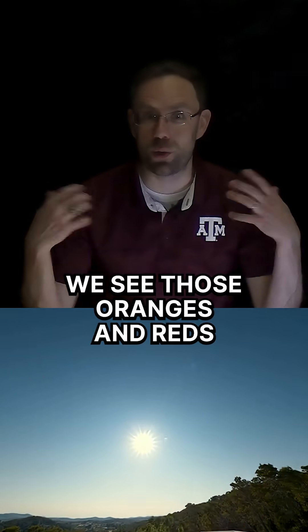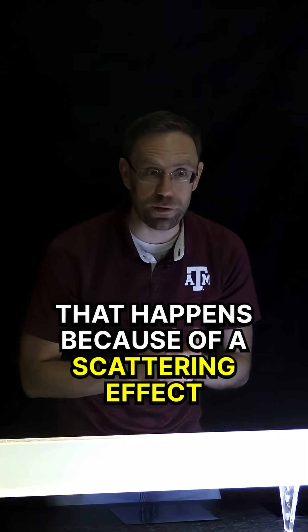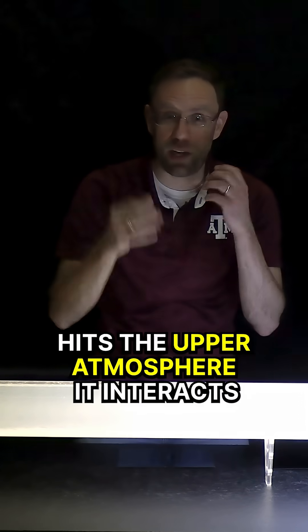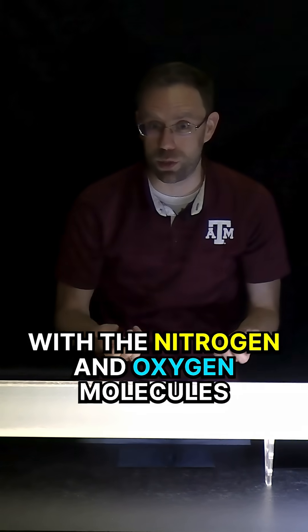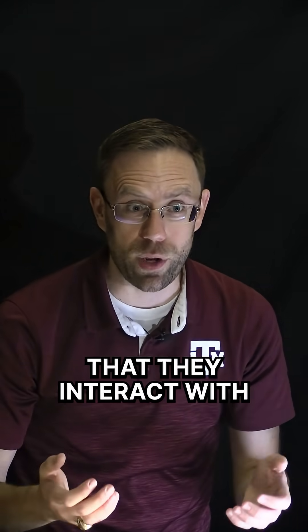In the sunrise and the sunset, we see those oranges and reds that we see in the atmosphere. That happens because of a scattering effect called Rayleigh scattering. The sun, when its light hits the upper atmosphere, it interacts with the nitrogen and oxygen molecules. Those nitrogen and oxygen molecules are much smaller than the overall wavelength of light that they interact with.